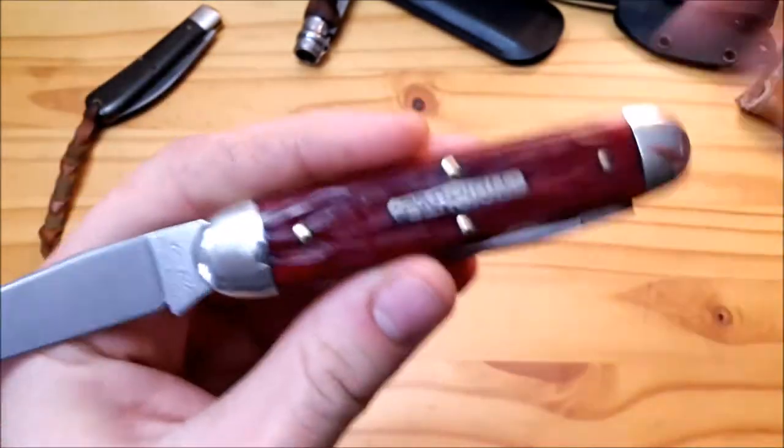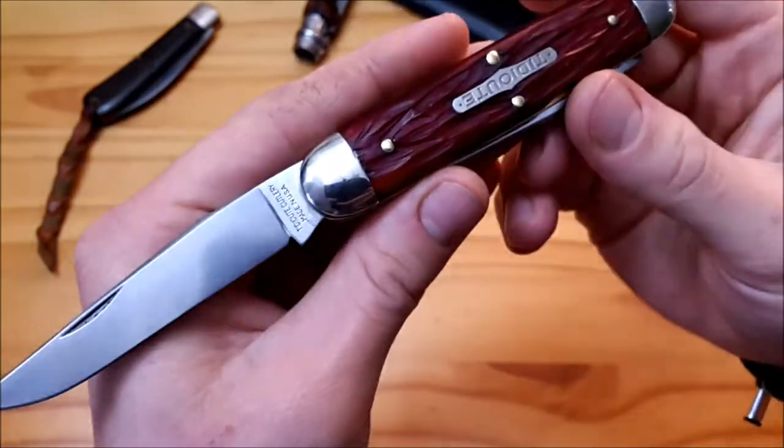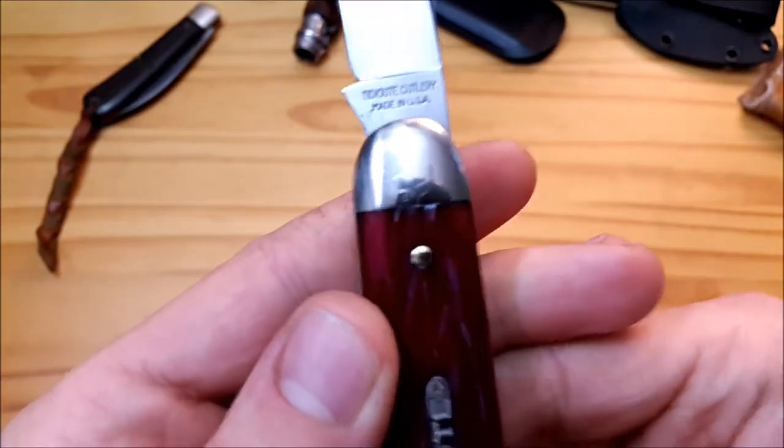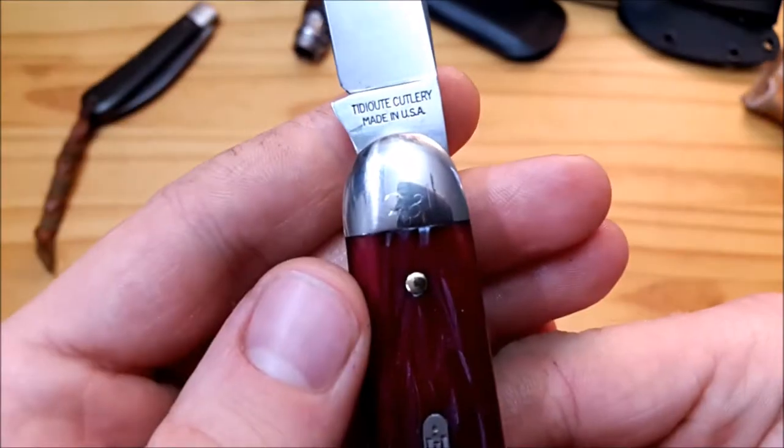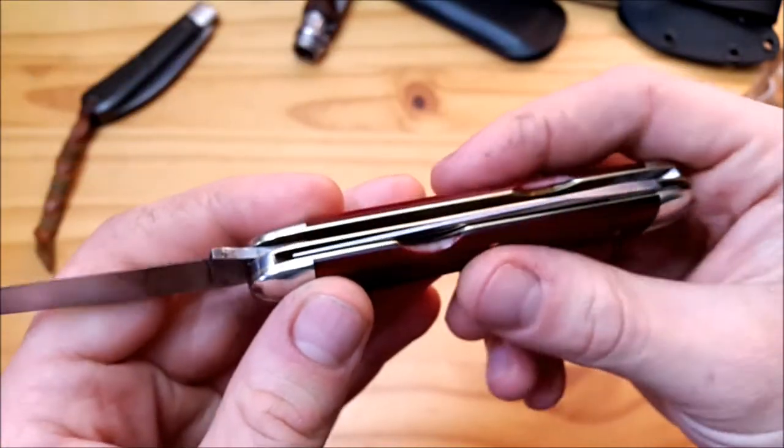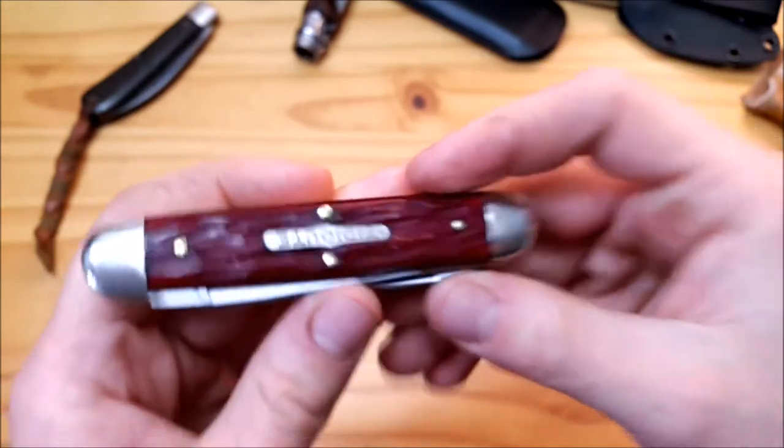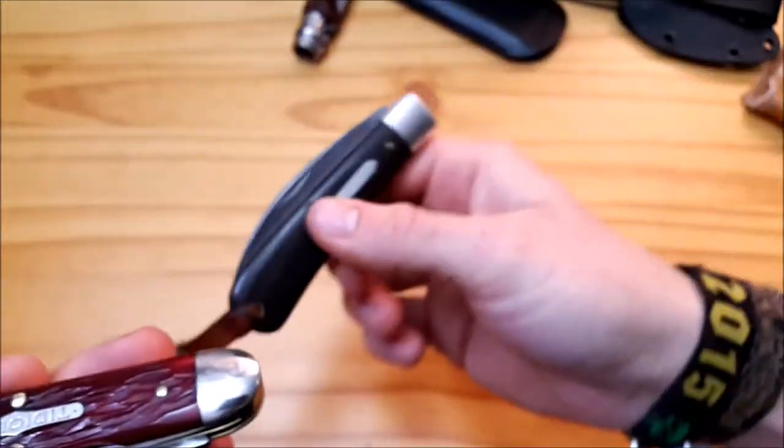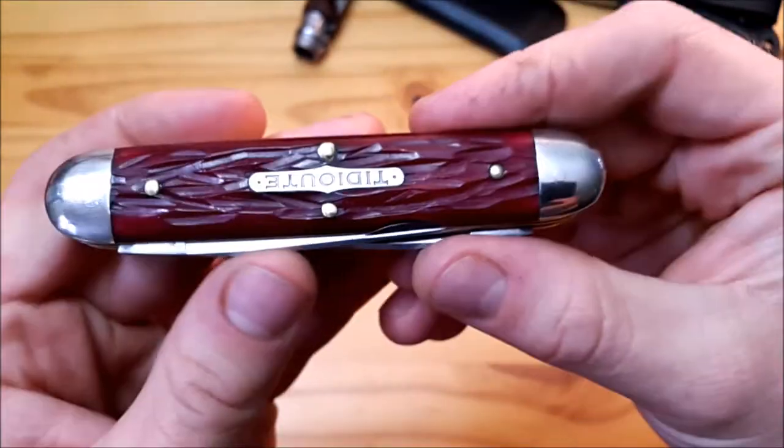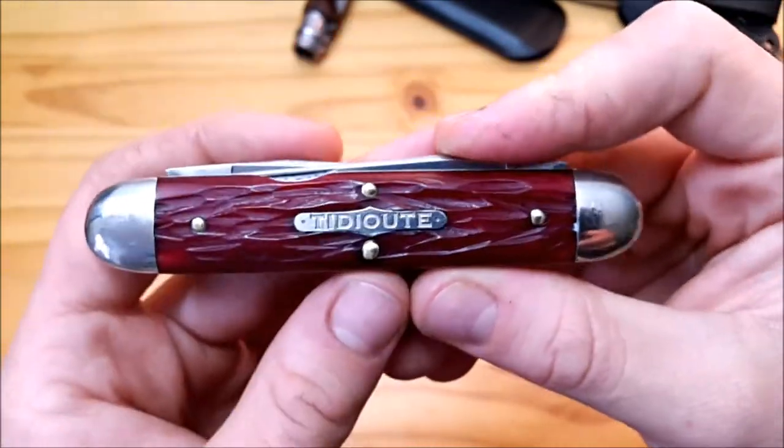This knife was made in 2008 and it was serialized, as you see here. This one's number 48 of 49 made, and I'm kind of happy to own a serialized Great Eastern Cutlery knife. My other knives are unserialized, so now I own one with a serial number and I kind of like that.